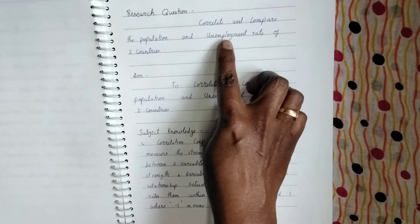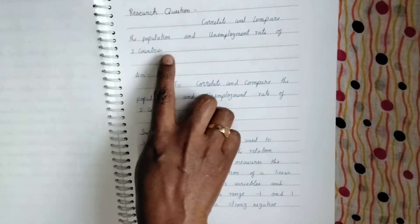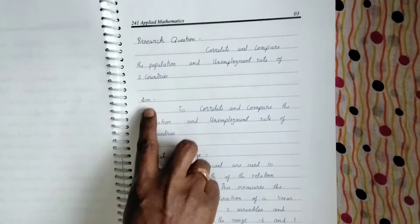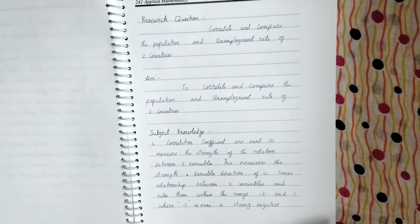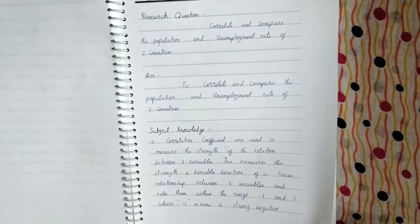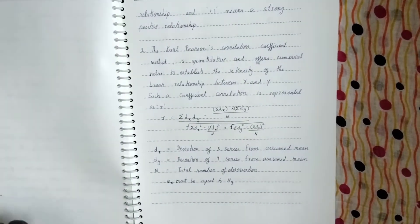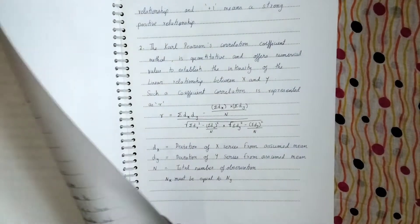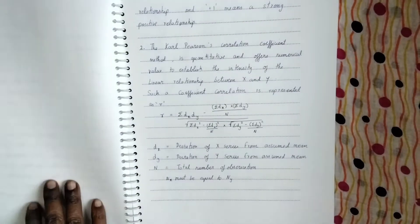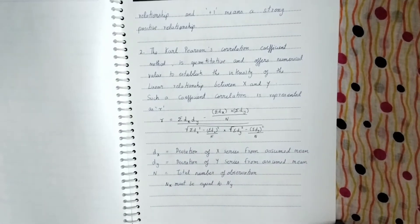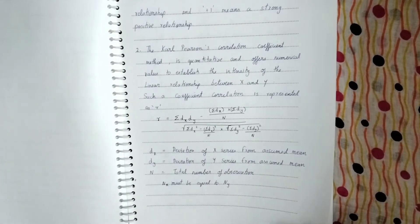So then he gave the research question. The research question is correlate and compare the population and unemployment rate of two countries. So the two countries which he's taken into consideration is Japan and India. So the statistical tool, the mathematical tool, what he's taken here is from statistics.